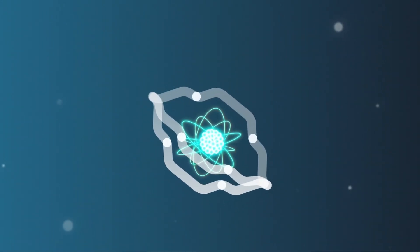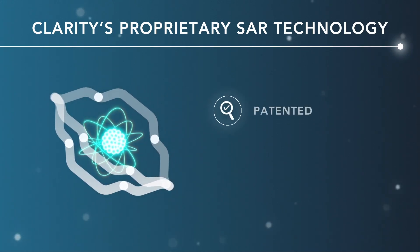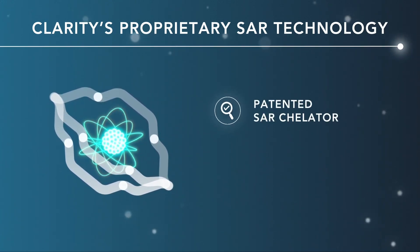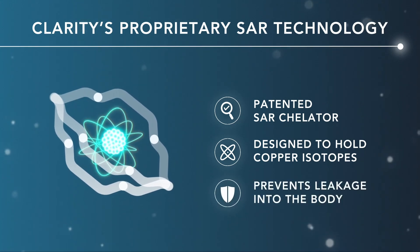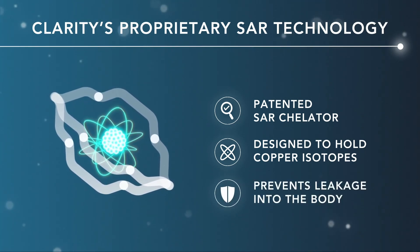The lack of an effective cage for copper isotopes has previously limited the use of Copper-67. Clarity's proprietary SAR technology utilizes a cage which is highly specific to copper isotopes and prevents leakage of the isotope from the radiopharmaceutical once administered to patients.